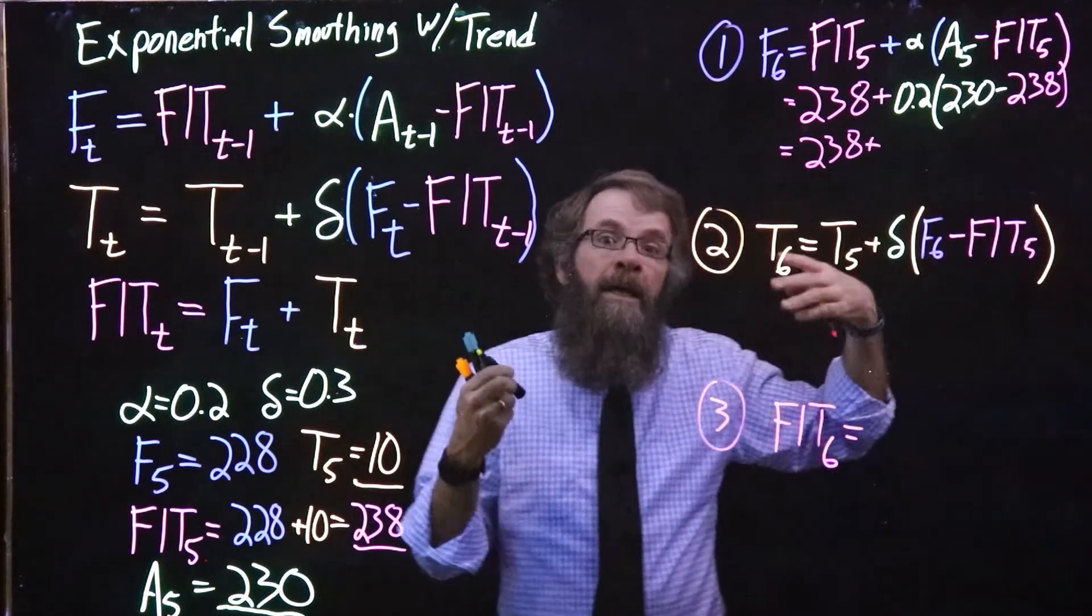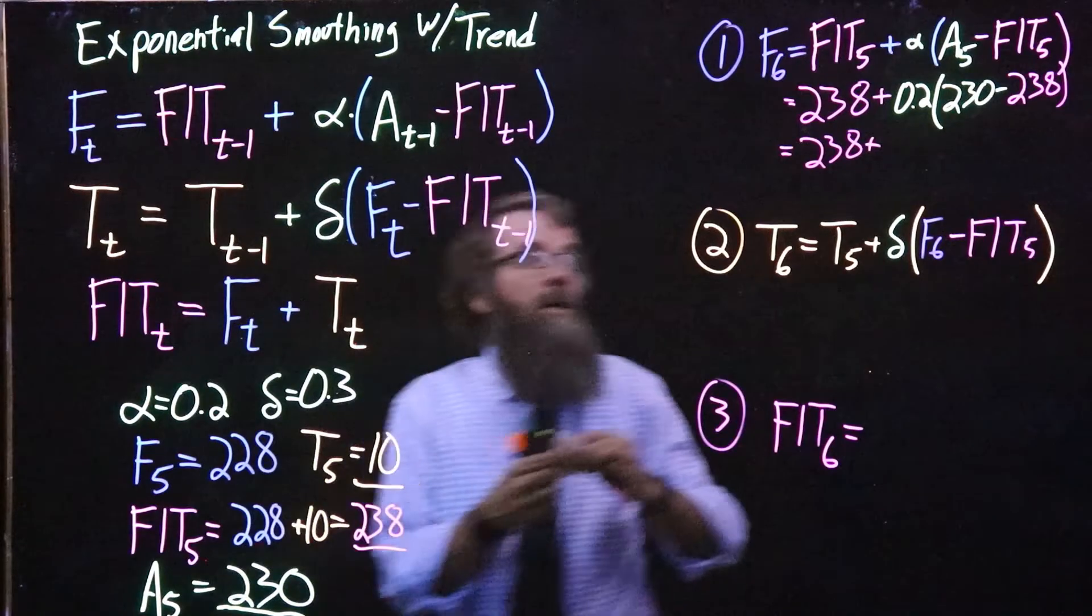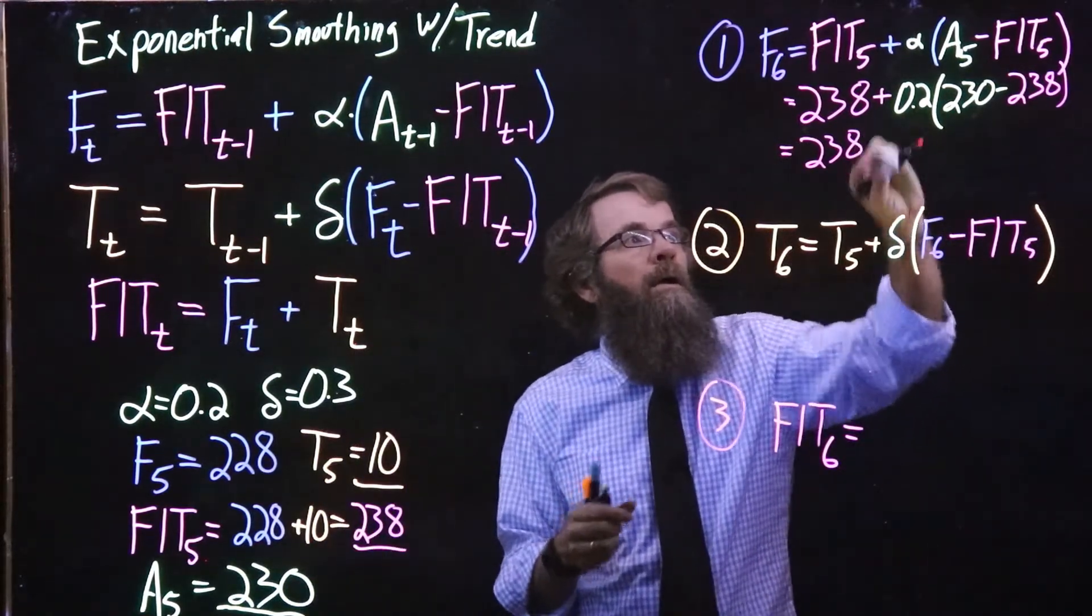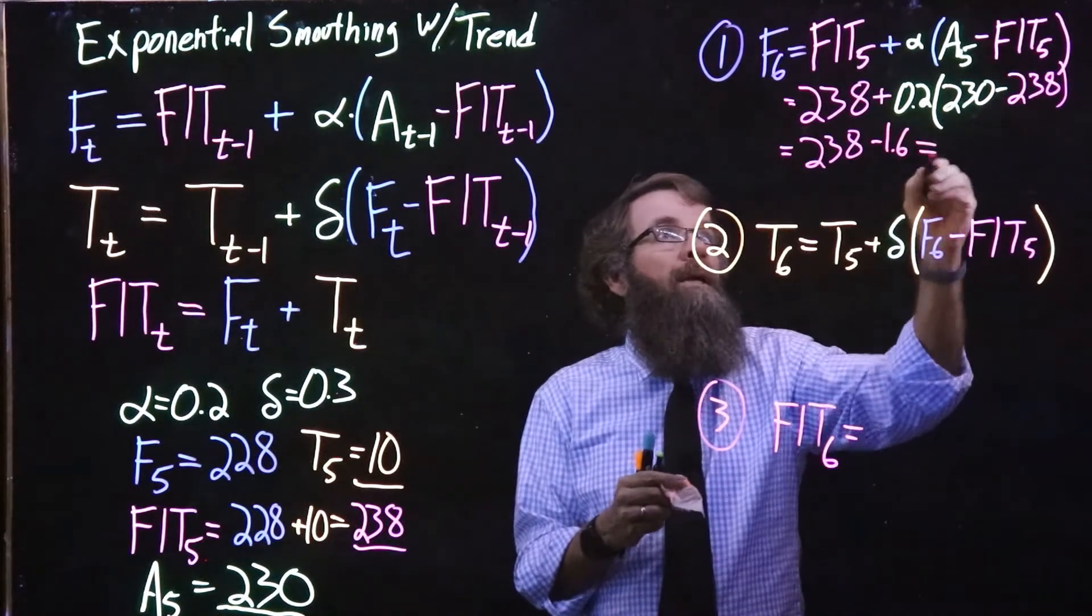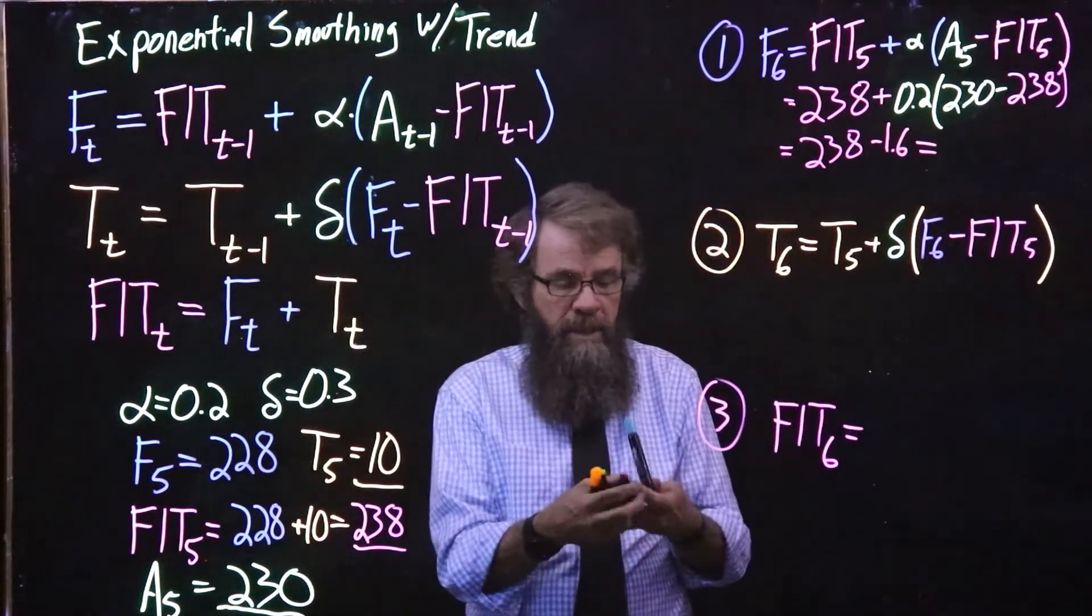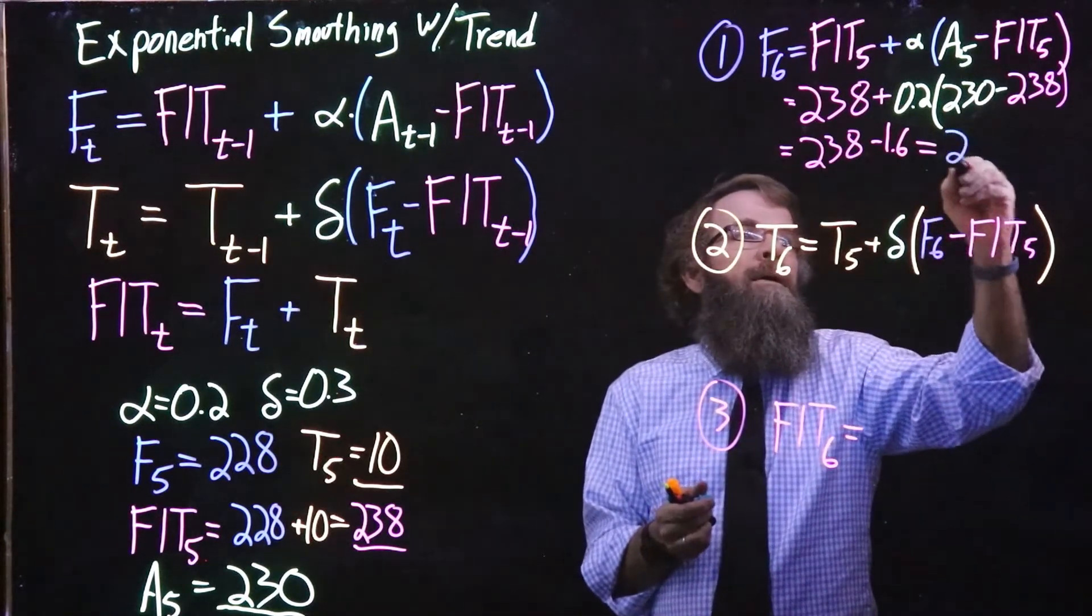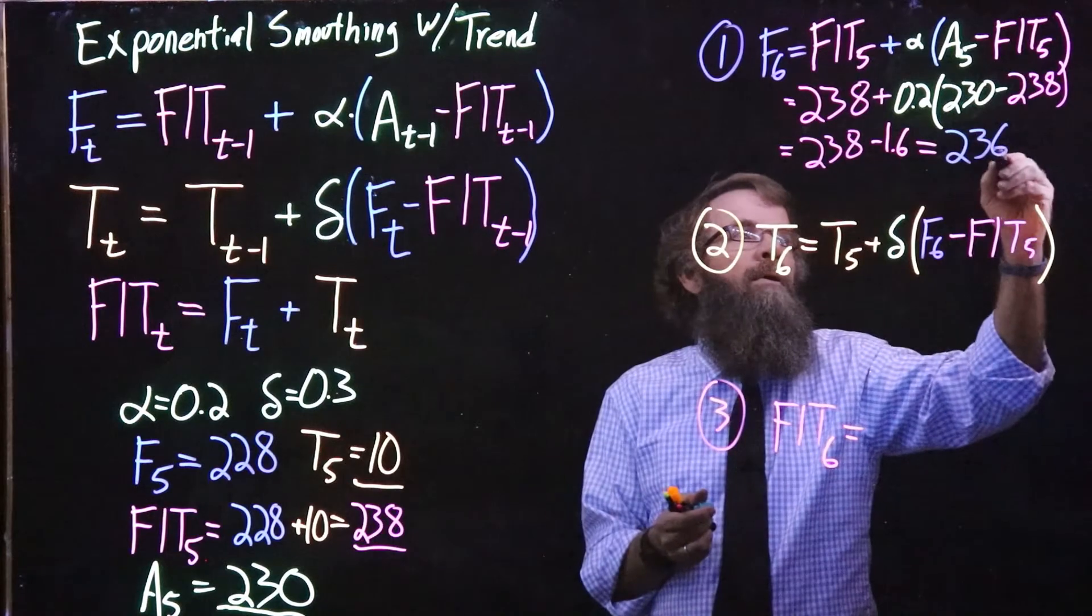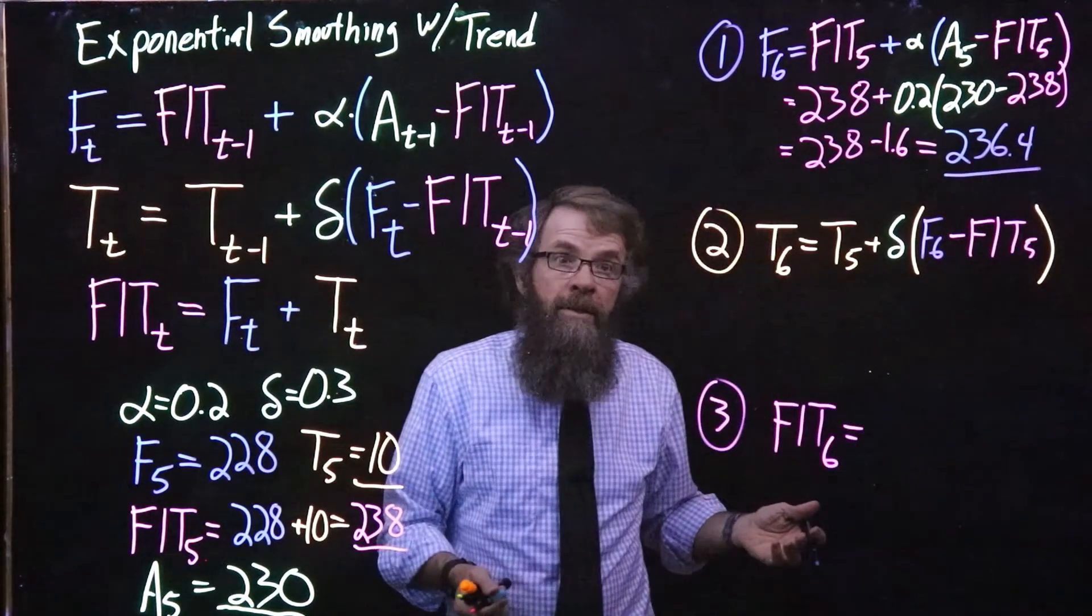So negative 8 times 0.2 is like subtracting off 1.6, so we get as our new level here, and we put this in blue to try to keep my color coding going as long as it can, that will be 236.4. That's our new estimate of the level.